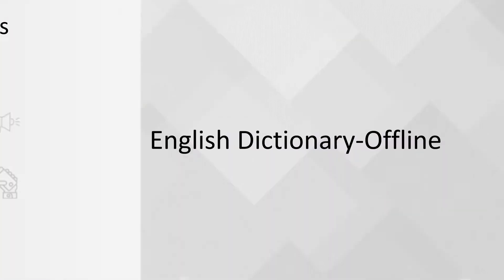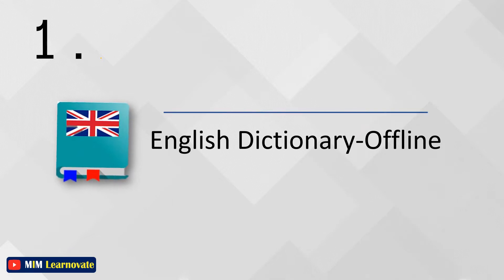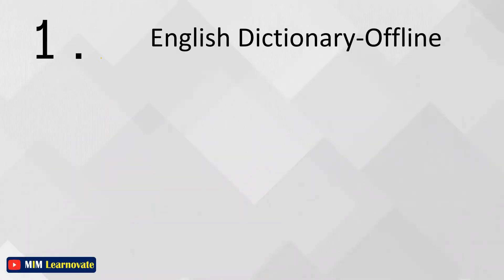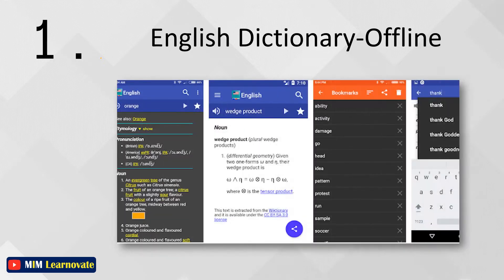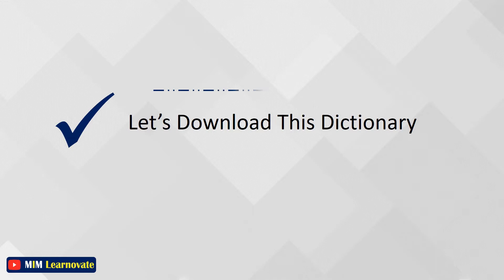The first app is English Dictionary Offline. The free offline English dictionary application explains the meaning of English words. Definitions are based on English Wiktionary. It has fast search, an easy and functional user interface, and is optimized also for tablets. It works offline without any further file to download, and this dictionary contains no ads.